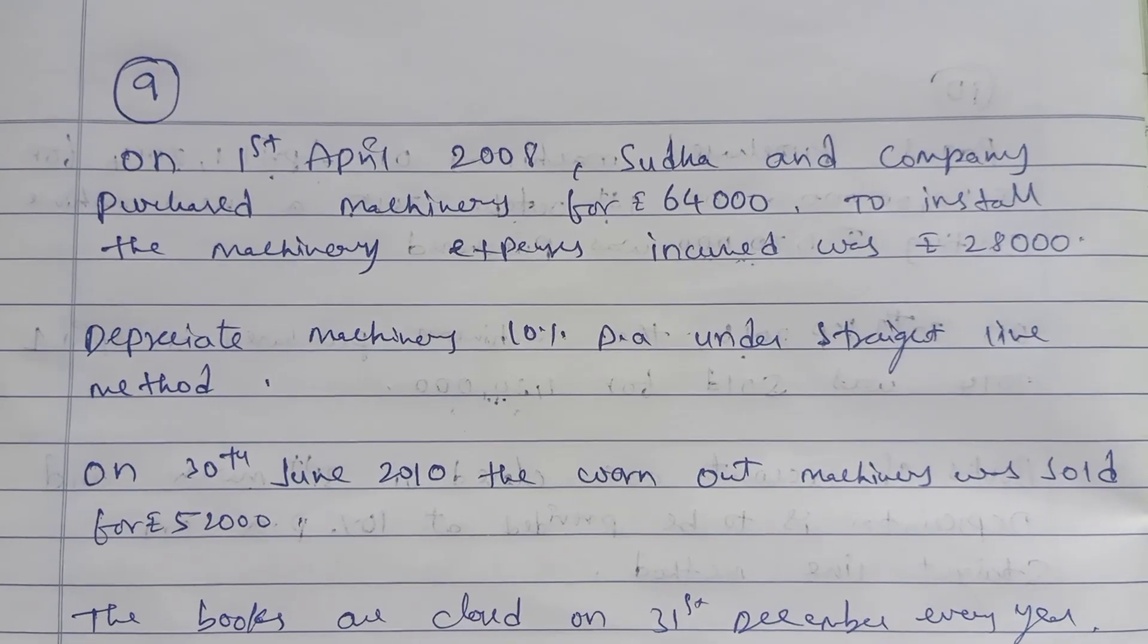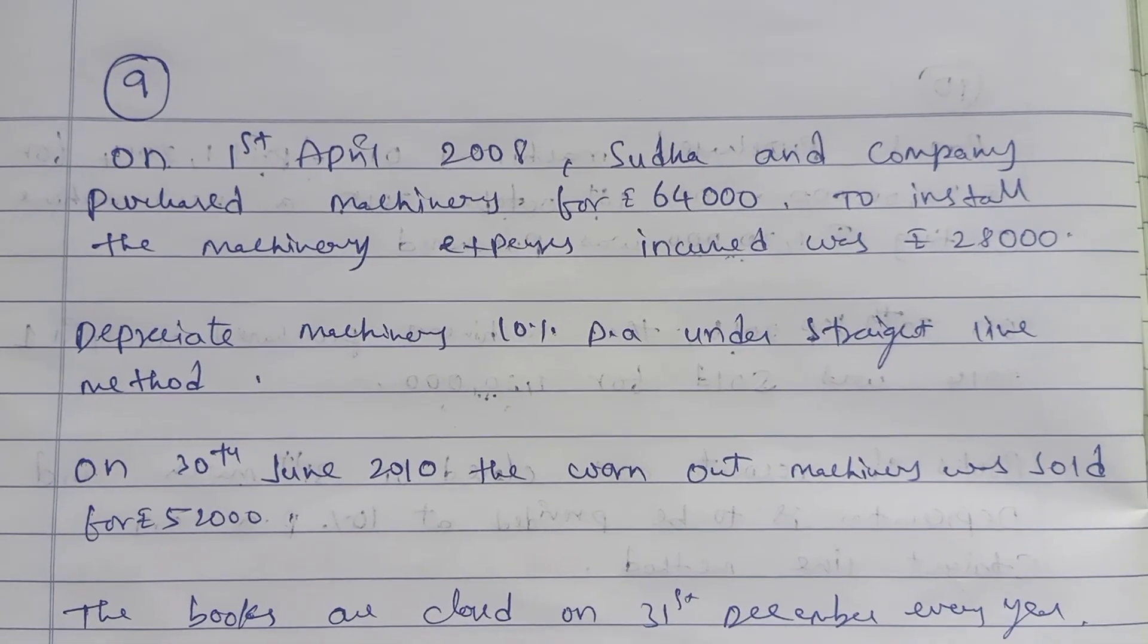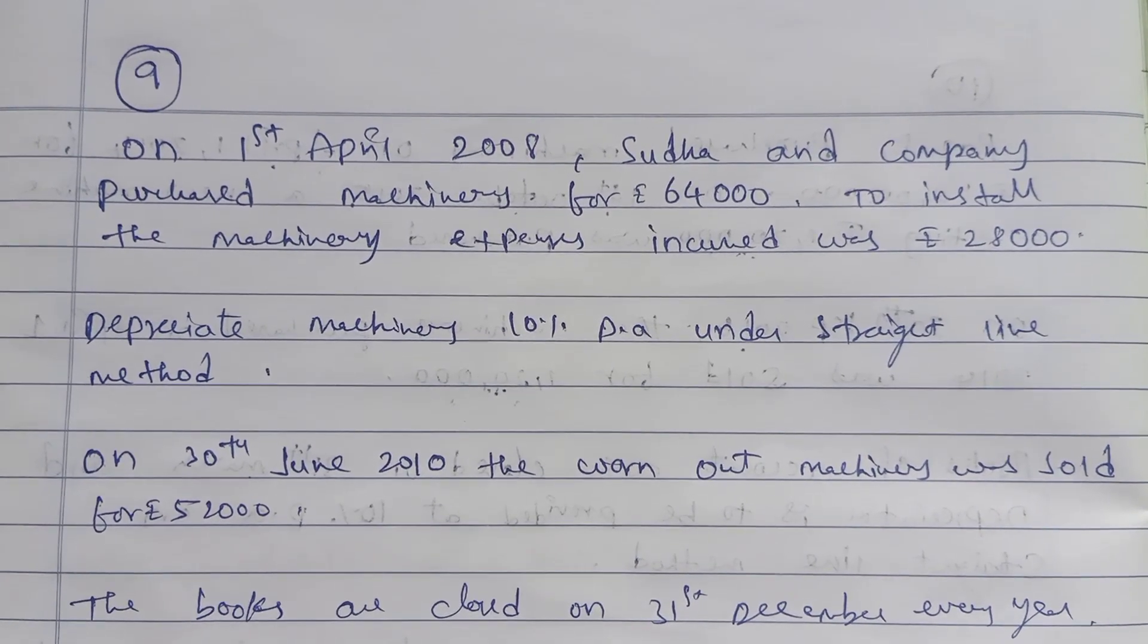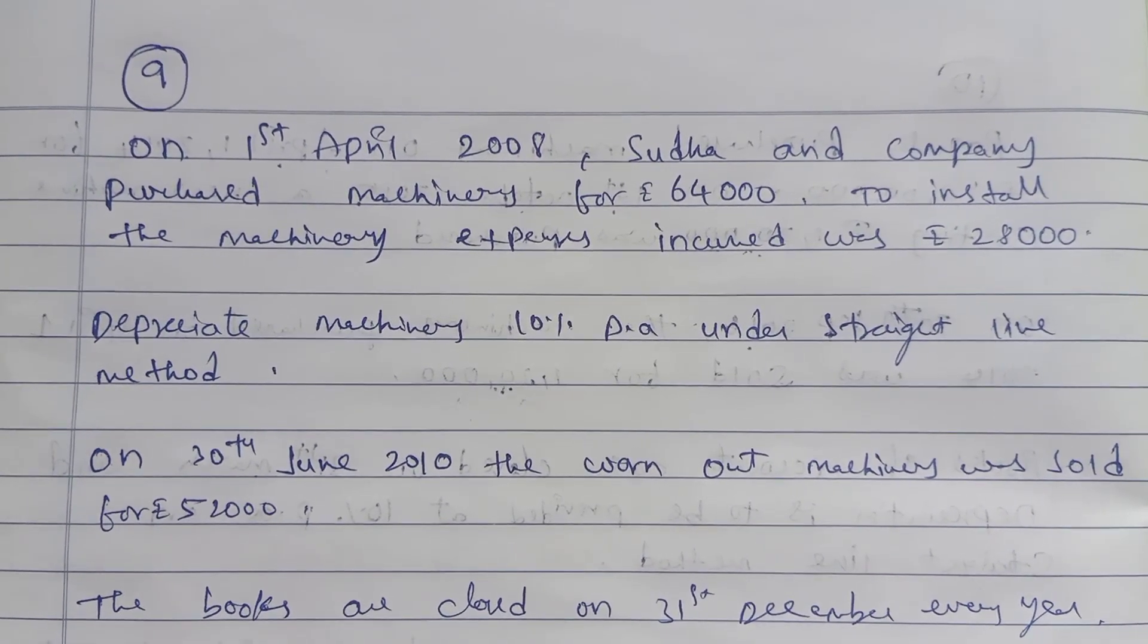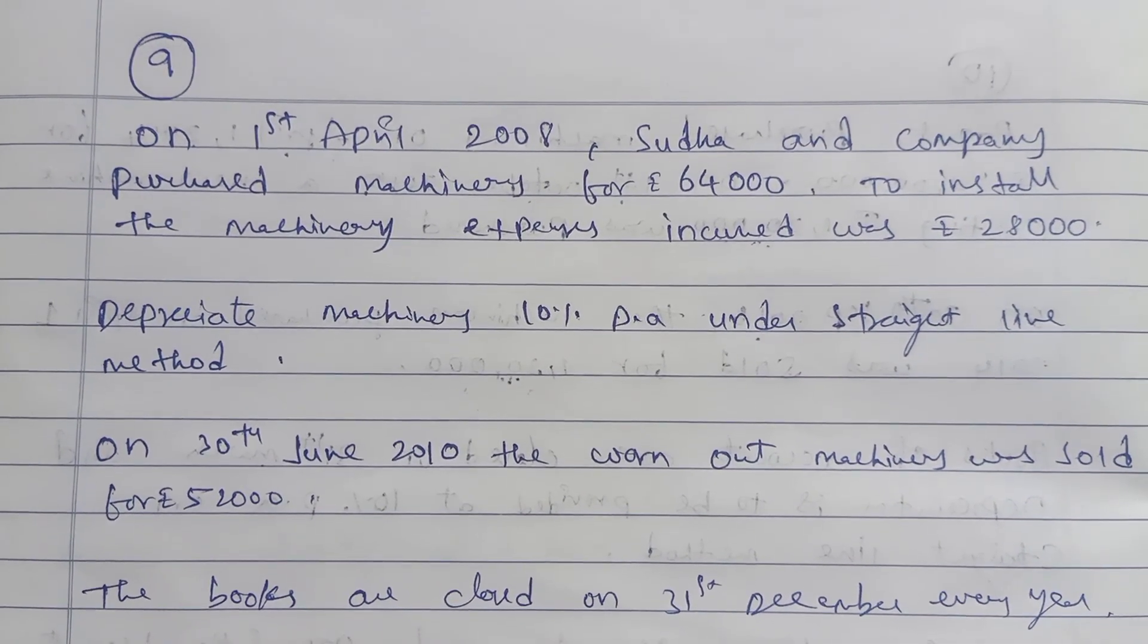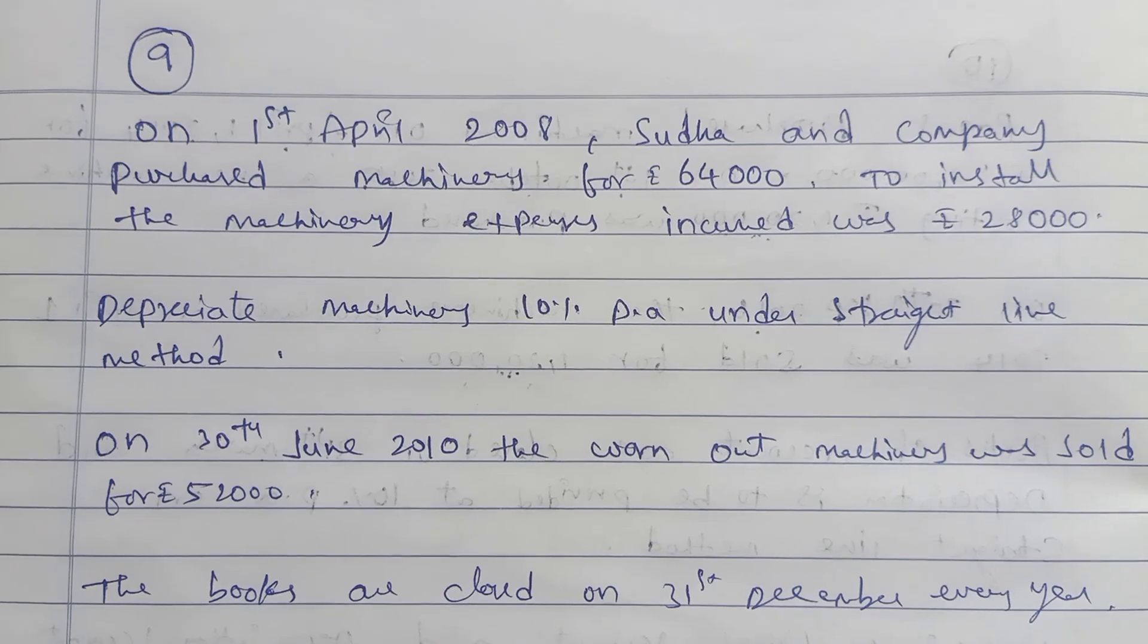Hi friends, in Chapter 10 Depreciation, let's solve this problem line by line. On 1st April 2008, Sudha and Company purchased machinery for $64,000. To install the machinery, expenses incurred was $28,000. Depreciate machinery 10% per annum under straight-line method.